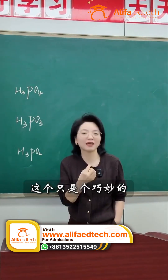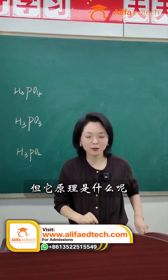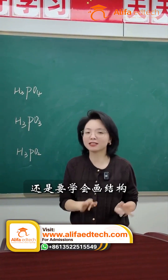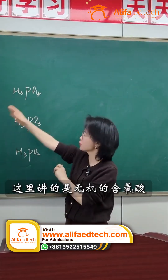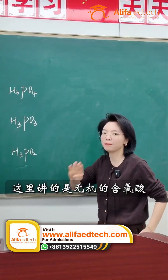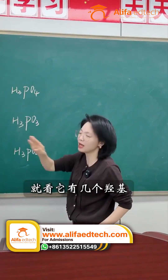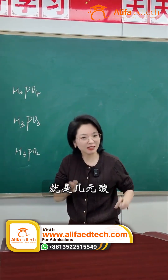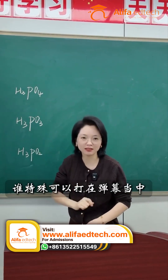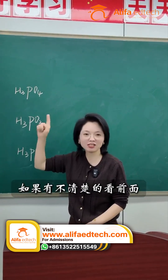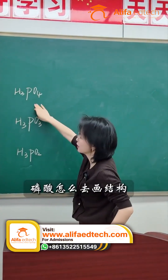Now, this is just a clever trick for figuring it out. But what's the principle behind it? The most reliable way is to learn how to draw the structure. What we're discussing here are inorganic oxyacids. The way to determine the basicity is to see how many hydroxyl groups it has — that number is its basicity. Of course, there is an exception. You can type it in the comments if you know which one it is; if not, you can check my previous videos where I've talked about it.